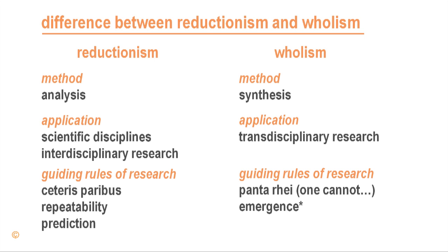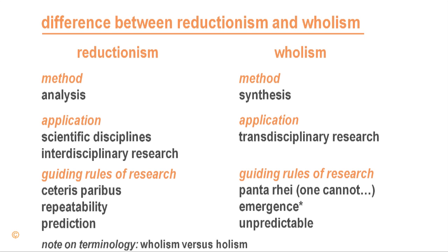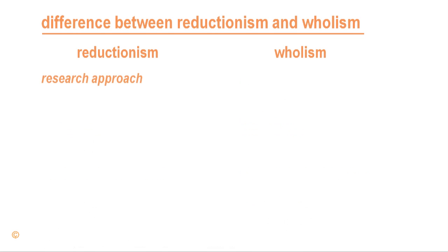This means that there exists knowledge which cannot be derived from the analysis of the interacting systems. It also means that outcomes are unpredictable because the interaction between different systems can be different each time, and therefore the emerging knowledge will be different. A note on terminology: wholism spelled with a W means that we are looking at wholes in the sense that all parts are considered, while holism spelled with H refers to the fact that wholes have emergent properties and are greater than the sum of their parts.